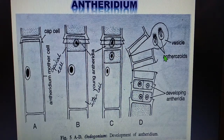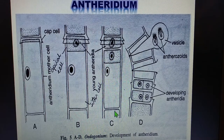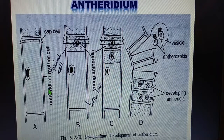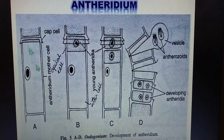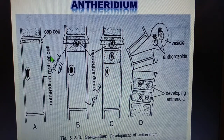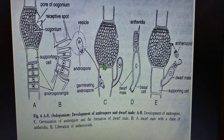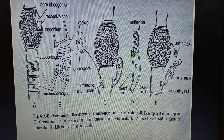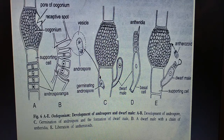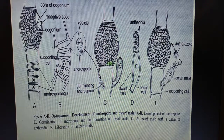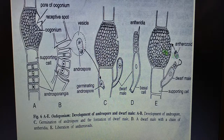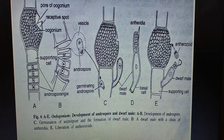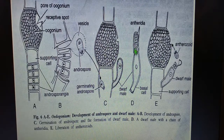This describes the macrandrous species — antherozoids form inside the antheridium, and any cell of the filament with a cap cell can act as the antheridial mother cell. In nannandrous species, the antheridia develop in specialized small two-to-four-celled filaments known as the dwarf male.